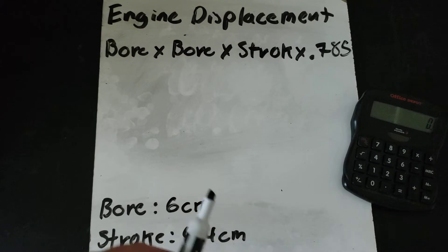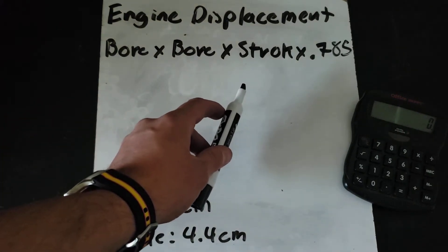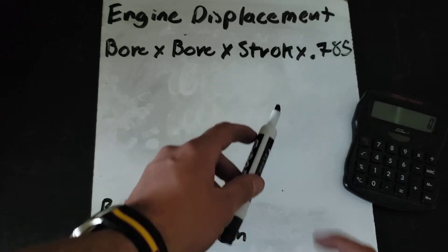So our formula for engine displacement is bore times bore times stroke times 0.785.